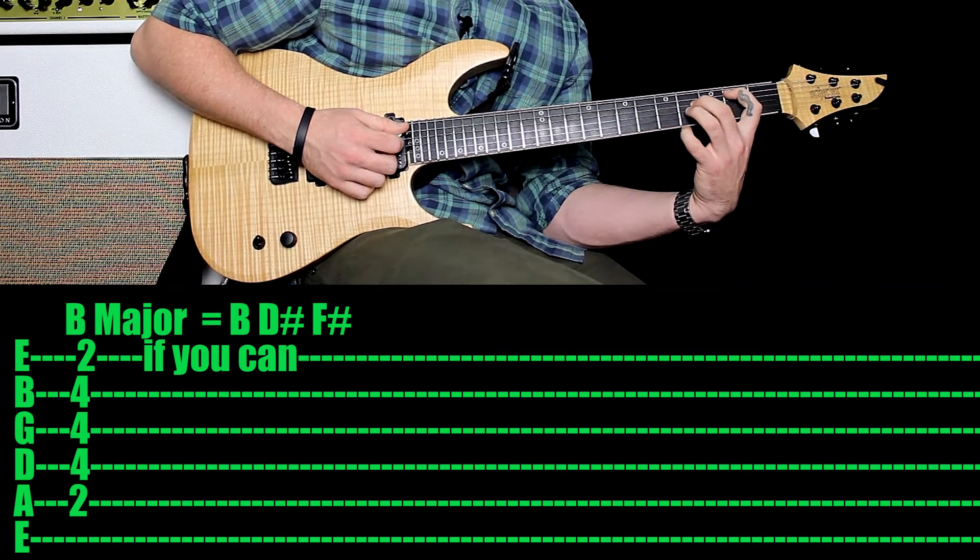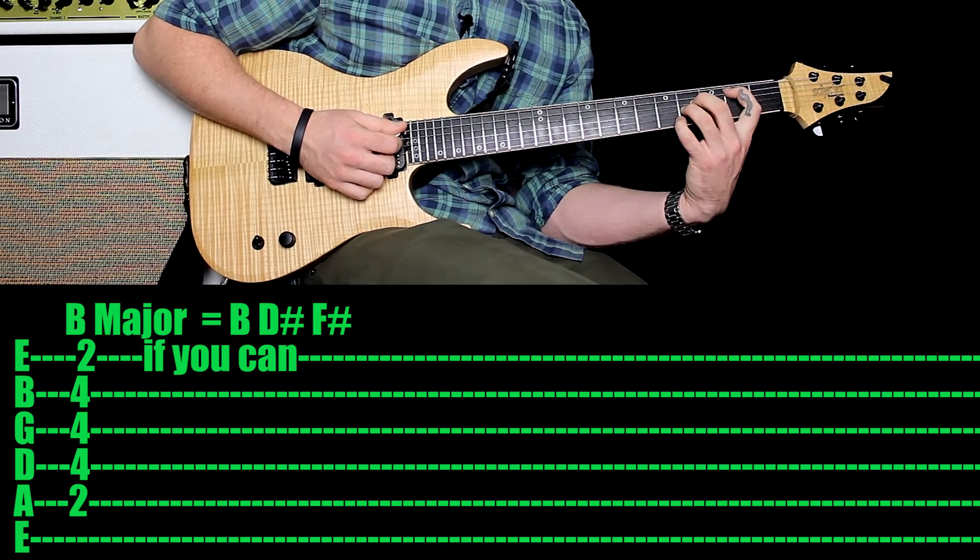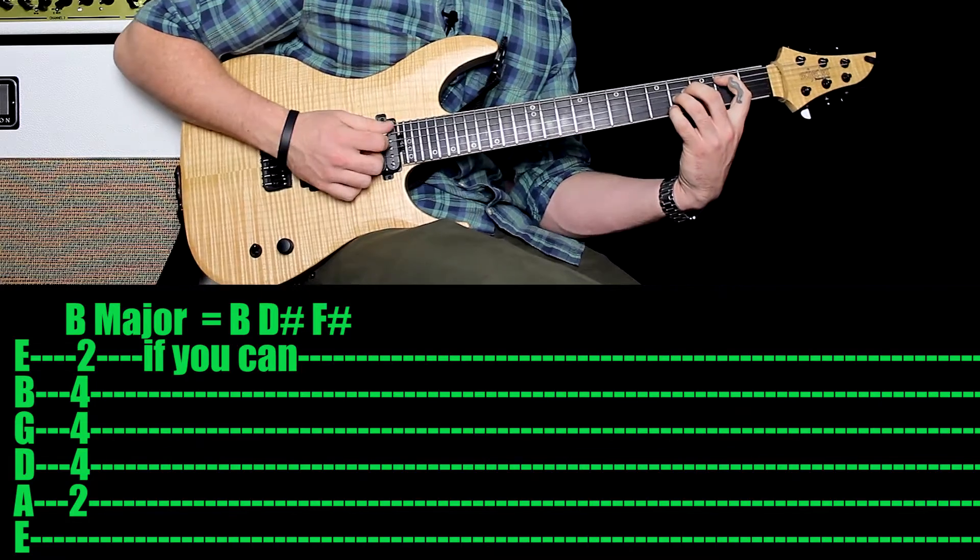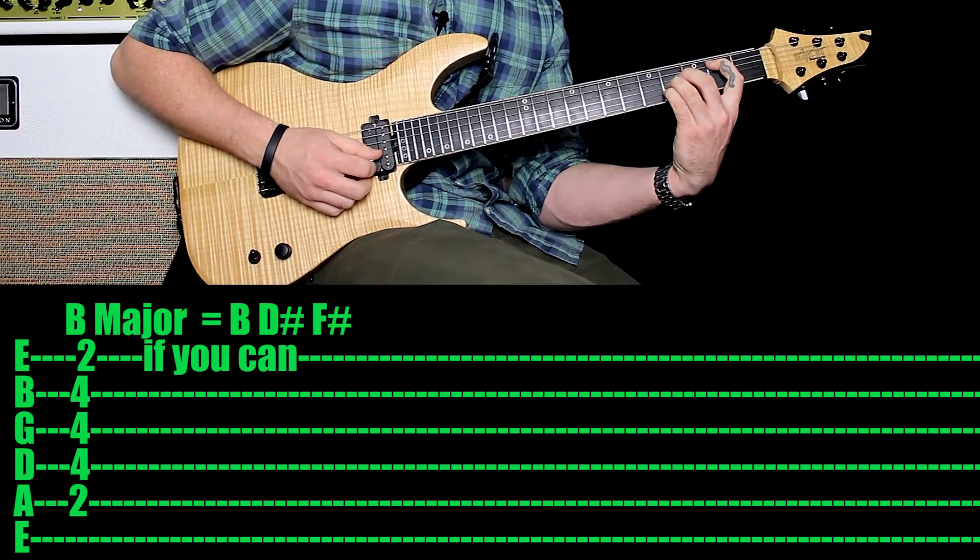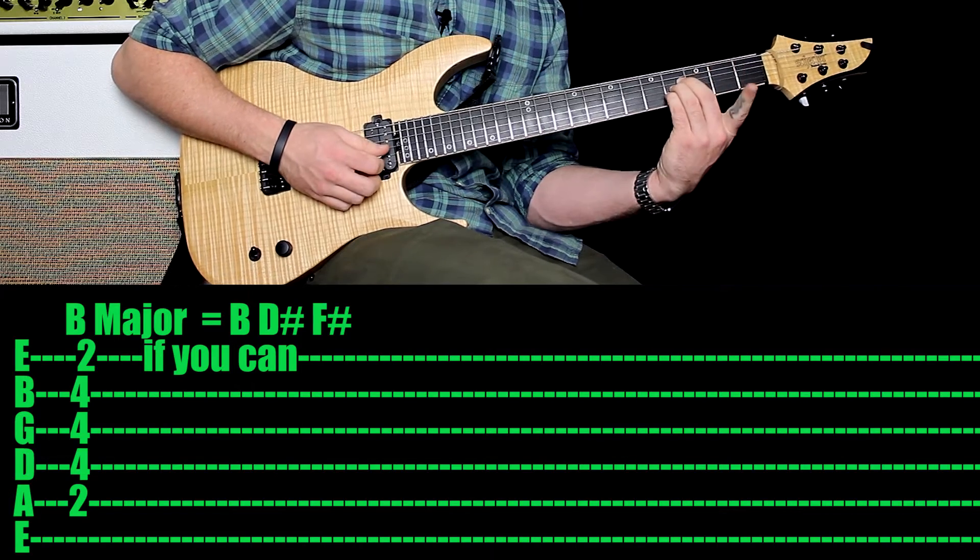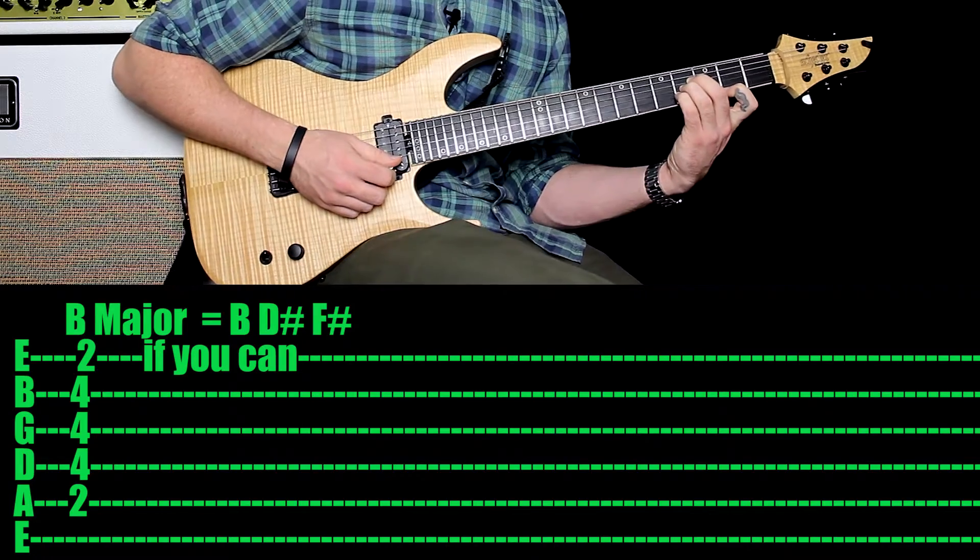Then you want your third finger stretched on the fourth fret of the third string, that's holding down another B note. Then you want your pinky on the fourth fret of the second string, that's your D sharp. And finally, with that first finger, you want to also be holding down the second fret on the first string.